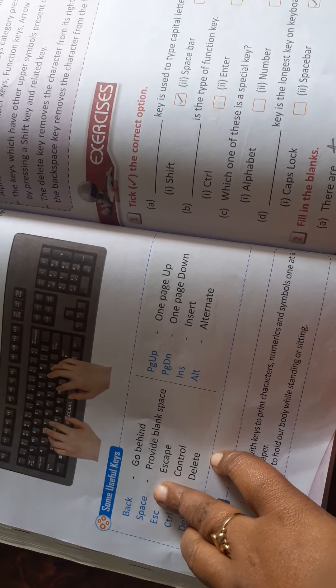Next is, space bar key is the longest key on the keyboard. What is the longest key called? Space bar. See, I will show you, it's also in the book. See, this is space, space bar. This key is the longest key on the keyboard. See, you can see from your book, it is the space key.